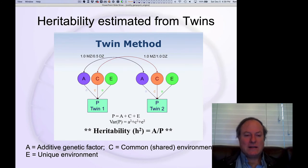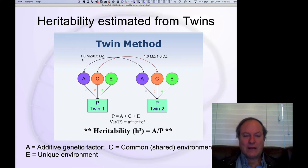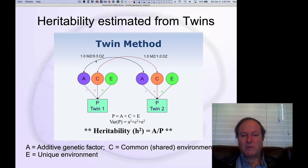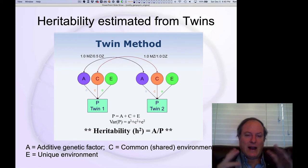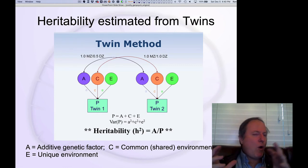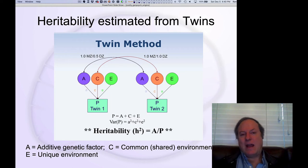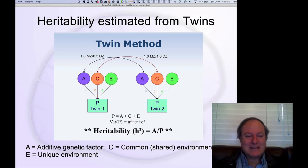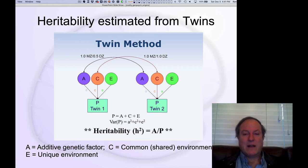It's really important to recognize that this method relies on a number of different assumptions. One is that A is an additive genetic factor — a linear assumption that having 100% of the same genes is basically twice as strong as having 50% of the same genes. But if genes interact in complex ways, then having all of the same genes can actually be quite significantly different — more than twice as different. That non-additive nature of genetic interactions tends to inflate the heritability estimates you get from this twin method.